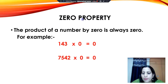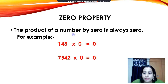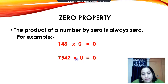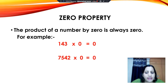Now we will discuss about the zero property. According to this property, whenever we multiply any number by 0, our product will be 0 only. For example, 143 multiplied by 0 is equal to 0, and 7,542 multiplied by 0 is also equal to 0. Whether the number is very big or small, whenever we multiply any number by 0, we will always get 0.